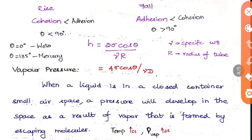The formula for capillary rise is: H = 2*sigma*cos(theta) / (gamma * R), where sigma is surface tension, theta is the contact angle, R is the radius of the tube, and gamma is specific weight (= rho*g). This can also be written as H = 4*sigma*cos(theta) / (gamma * D), where D is diameter. Theta for water is 0° and for mercury is 135°.